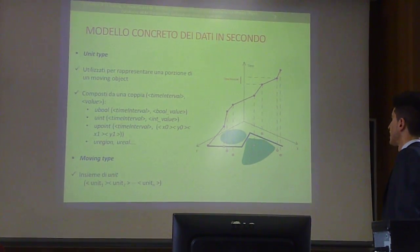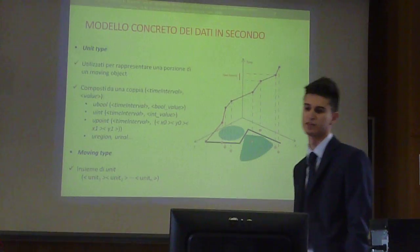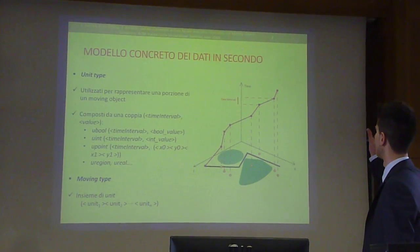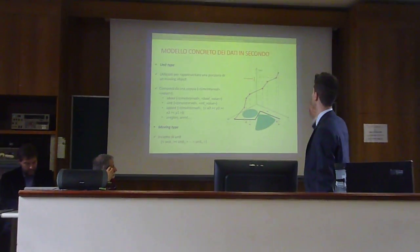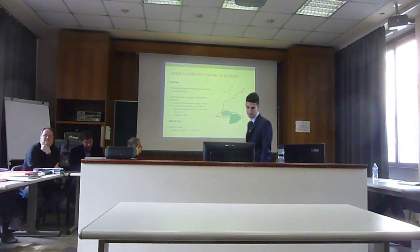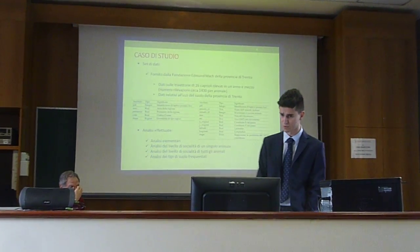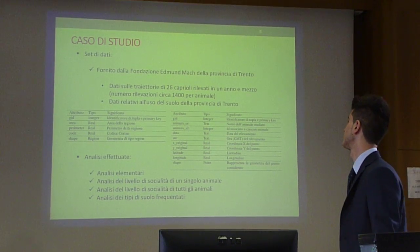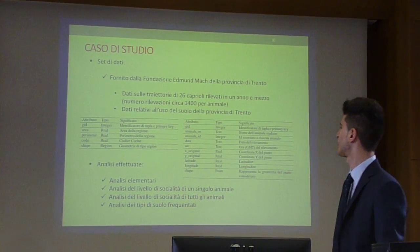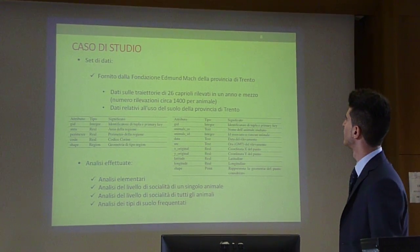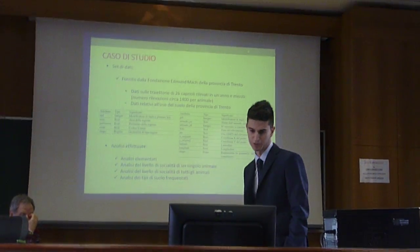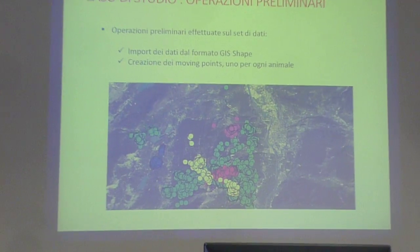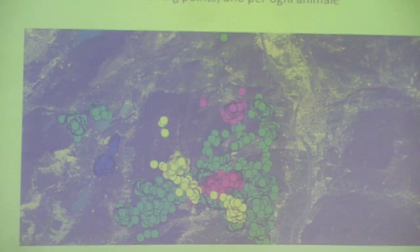Questi segmenti vengono chiamati units e sono utilizzati per rappresentare una porzione di moving object. Sono composti da un proprio time interval e valore. Nel caso del moving point, le unit point hanno l'intervallo di tempo e il punto iniziale e finale. L'insieme delle units forma un'unità. Nel caso di studio abbiamo utilizzato un test di dati fornito dalla Fondazione Unmarche della provincia di Prezzo, che comprendeva dati sulle traiettorie di 26 caprioli rilevati in un anno e mezzo, circa 1.400 rilevazioni per animale. Le operazioni preliminari sono state l'import dei dati dal formato GIS e la creazione dei moving point, uno per ogni animale.